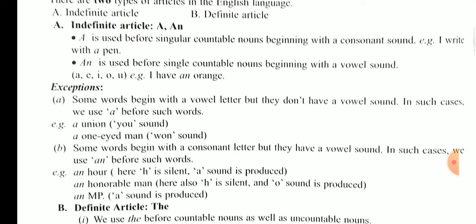इसी तरह से दूसरा है हमारा - 'a one-eyed man'. अब one के साथ आप कहोगे 'an' क्यों नहीं लगता? क्योंकि one O से start होता है - O-N-E. O जो है वो हमारा vowel है। लेकिन one बोलो आप - लिखने में O-N-E है, but जब हम बोलते हैं तो sound आता है 'वा' का। तो 'वा' जो है वो consonant से start हो रहा है, इसलिए उसके साथ हम 'a' लगाएंगे। तो अब से हमने words को बोल कर देखना है - अगर vowel sound पहले आता है तो 'an' लगाएंगे, otherwise 'a' लगेगा।